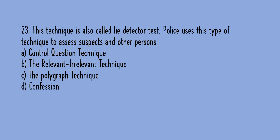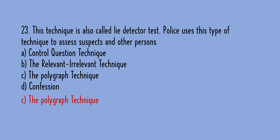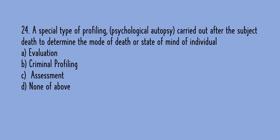MCQ 23: Options included the control question technique, the relevant-irrelevant technique, the polygraph technique, and the confession technique. The correct answer is C, the polygraph technique. The polygraph technique has two further types: the control question technique and the relevant-irrelevant technique. MCQ 24: A special type of profiling or psychological autopsy carried out after the subject's death to determine mode of death or state of mind — the correct answer is B, criminal profiling.